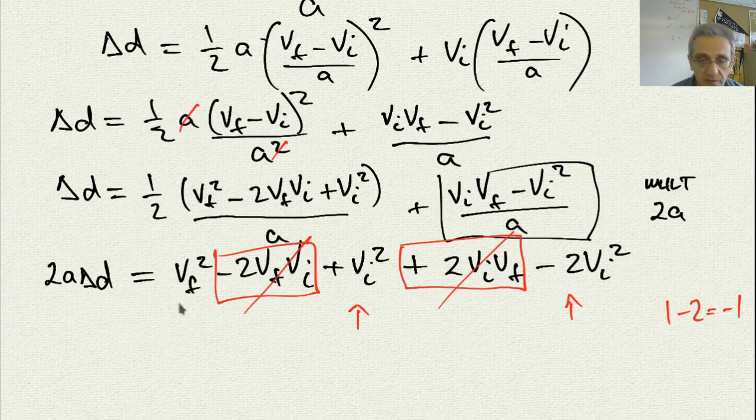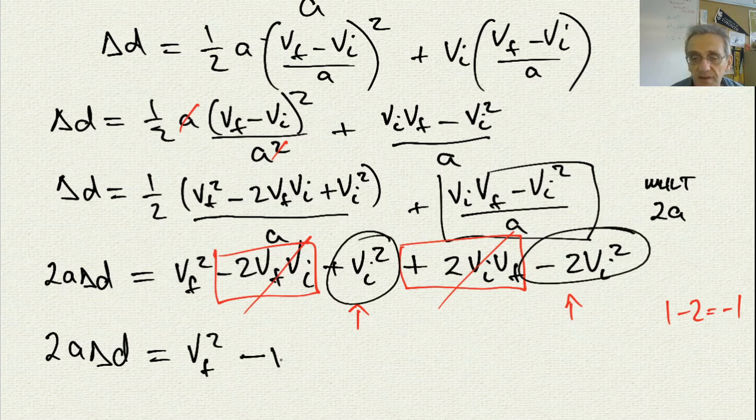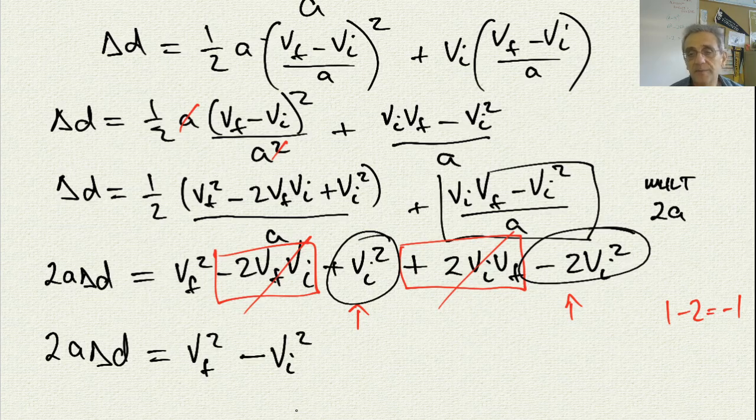Therefore, I'm going to get 2a delta d equals v-final squared. Now, I can say both these two terms result in minus vi squared. Notice, the terms in the red boxes cancel each other out, and the circled terms result in minus vi squared, because 1 minus 2.